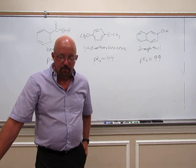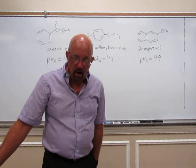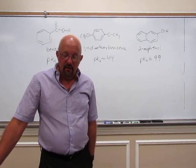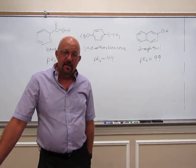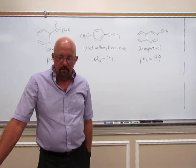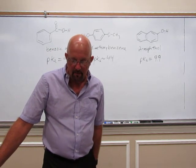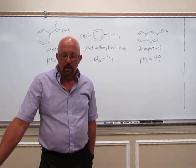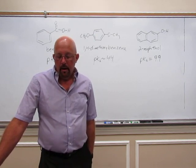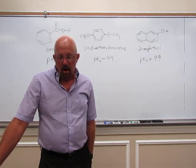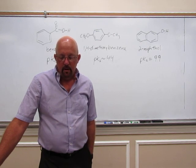The procedure says to dissolve 180 milligrams of the mixture — the mixture of the three compounds — in 2 milliliters of t-butyl methyl ether. This is our solvent, a type of ether. You're going to put that into tube A. Then add approximately 1 milliliter of saturated sodium bicarbonate to tube A and mix for three minutes.